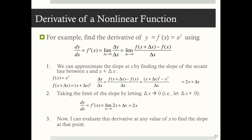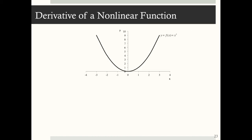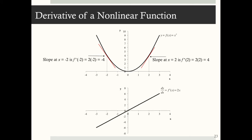Now I can evaluate this derivative at any value of x to find the slope at that point. Here's a graph of y equals x squared. The derivative at any point is 2x. For example, the slope at x equals negative 2 is f prime of negative 2, which equals negative 4. The slope at x equals 2 is f prime of 2, which equals 4. We can even graph the derivative: dy/dx equals f prime of x equals 2x. On that graph, when x equals negative 2 the derivative is negative 4, and when x equals 2 the derivative is positive 4.